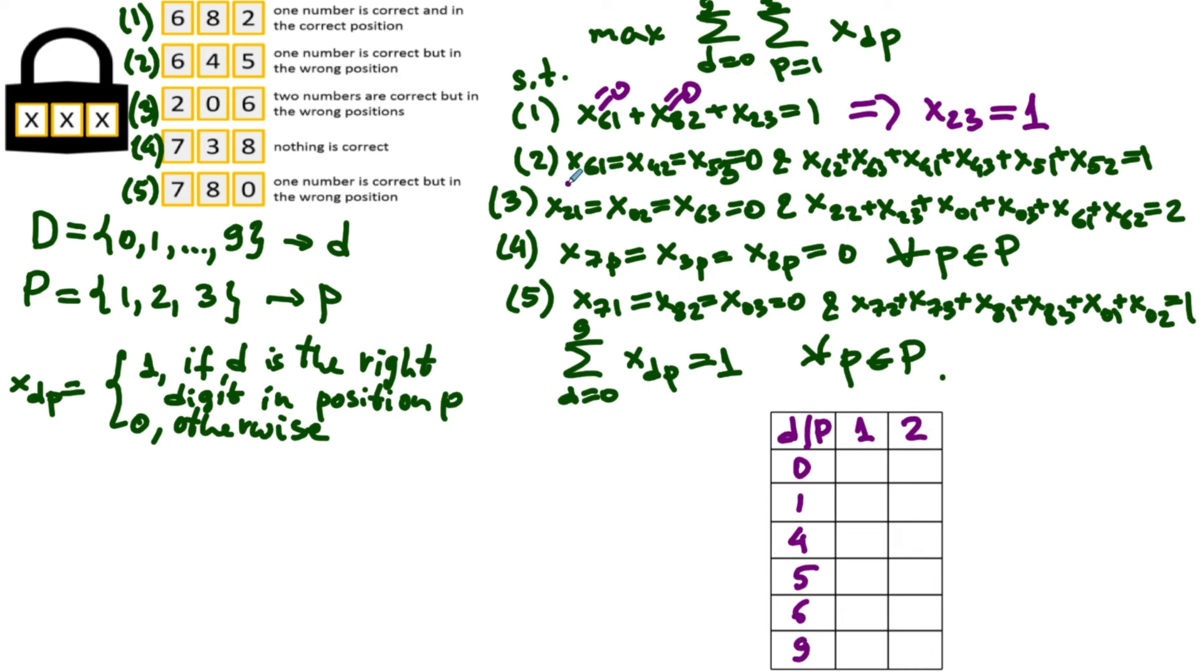Let's see if we can use some of the constraints to fix more variables. I suggest we pick the low-hanging fruit first. Clearly, from the second condition, x six one and x four two are zero. Also, from the third condition, x zero two is zero. Yes, Max, that's an easy one too. Let's see what else we can fix.